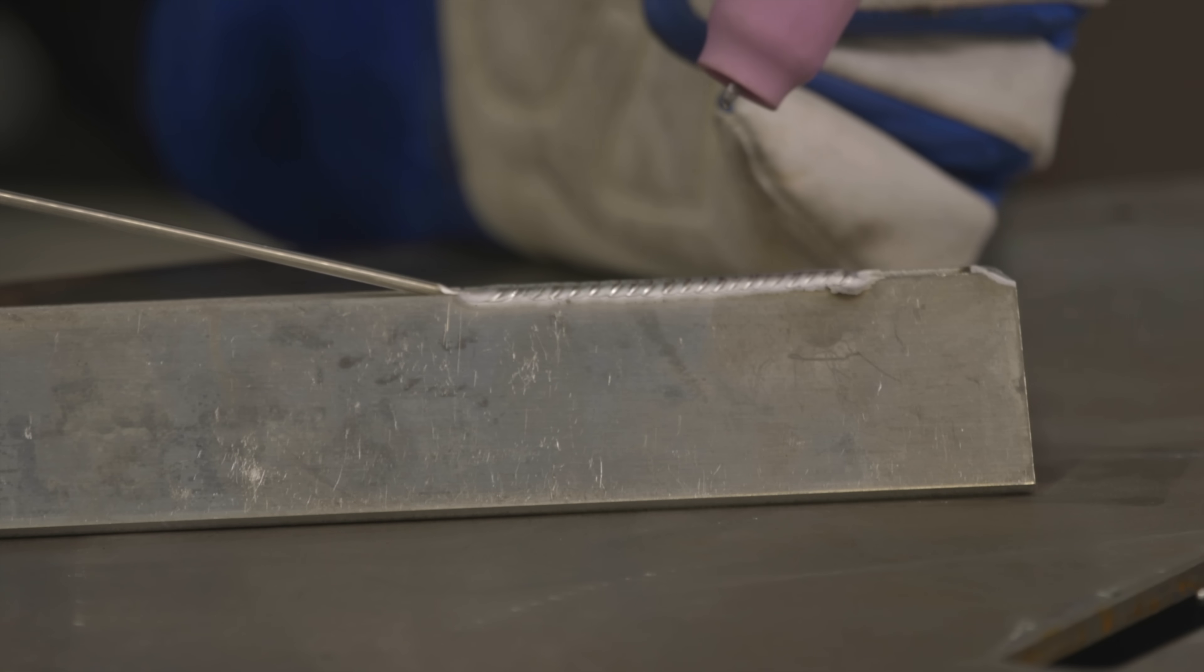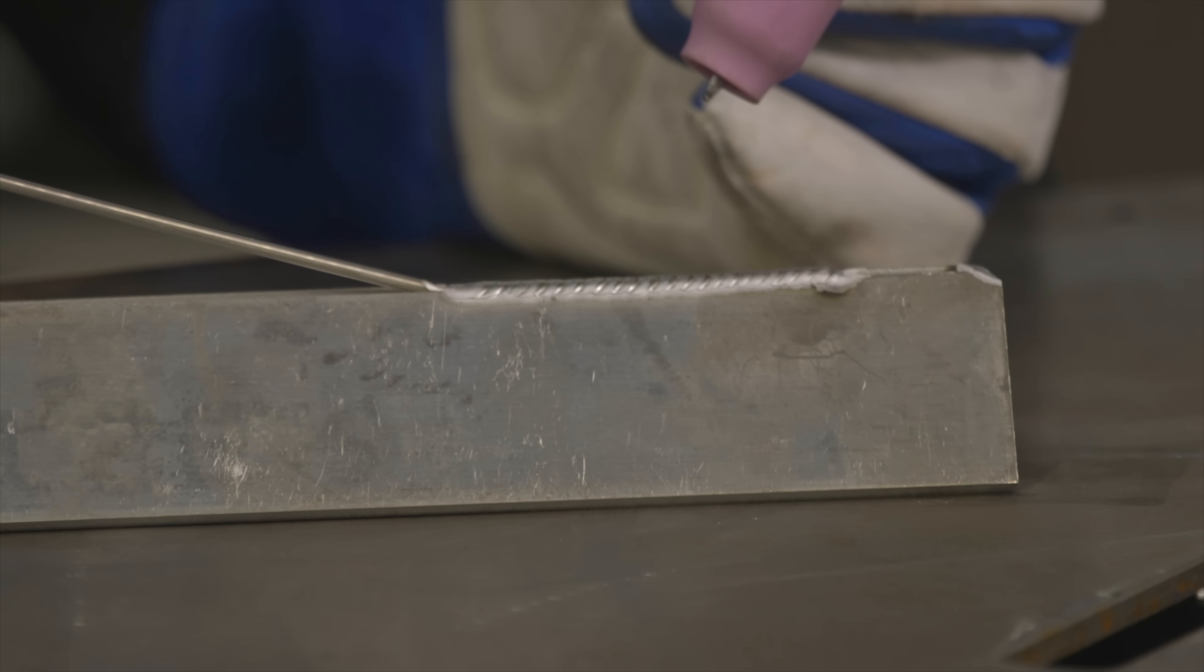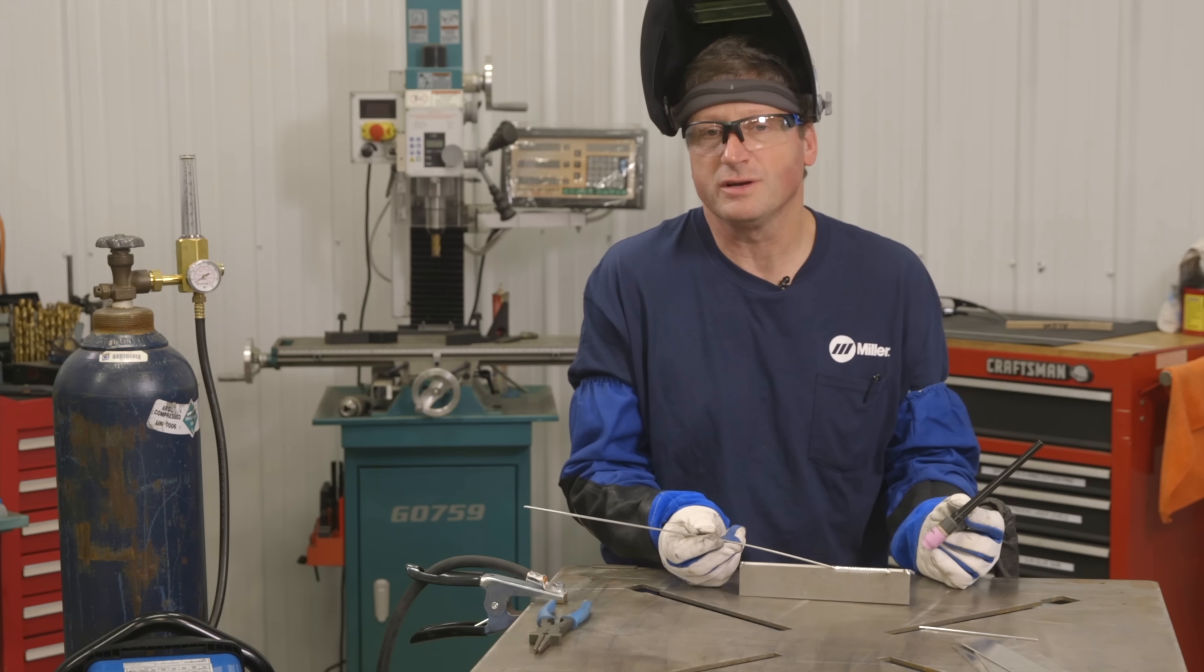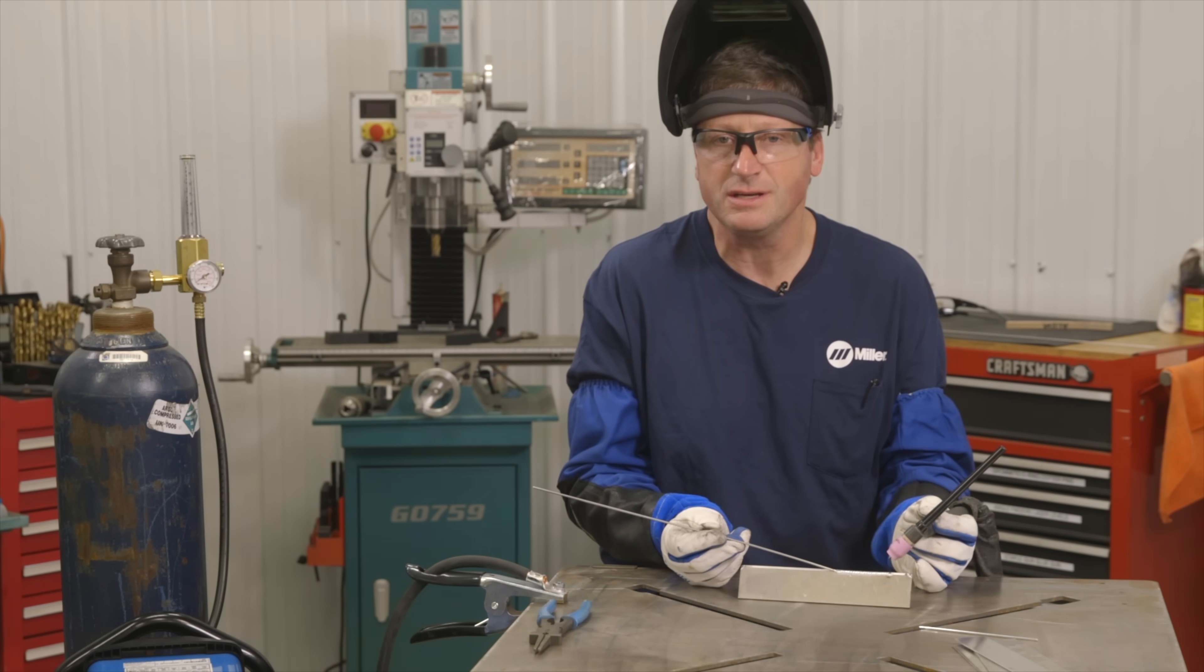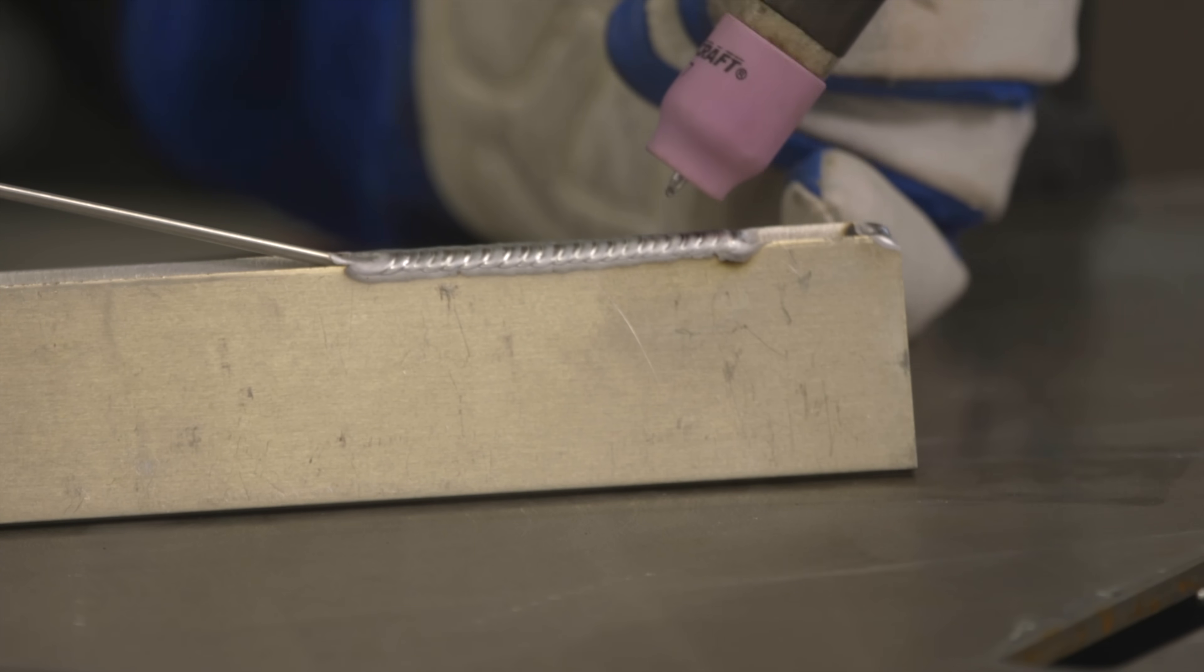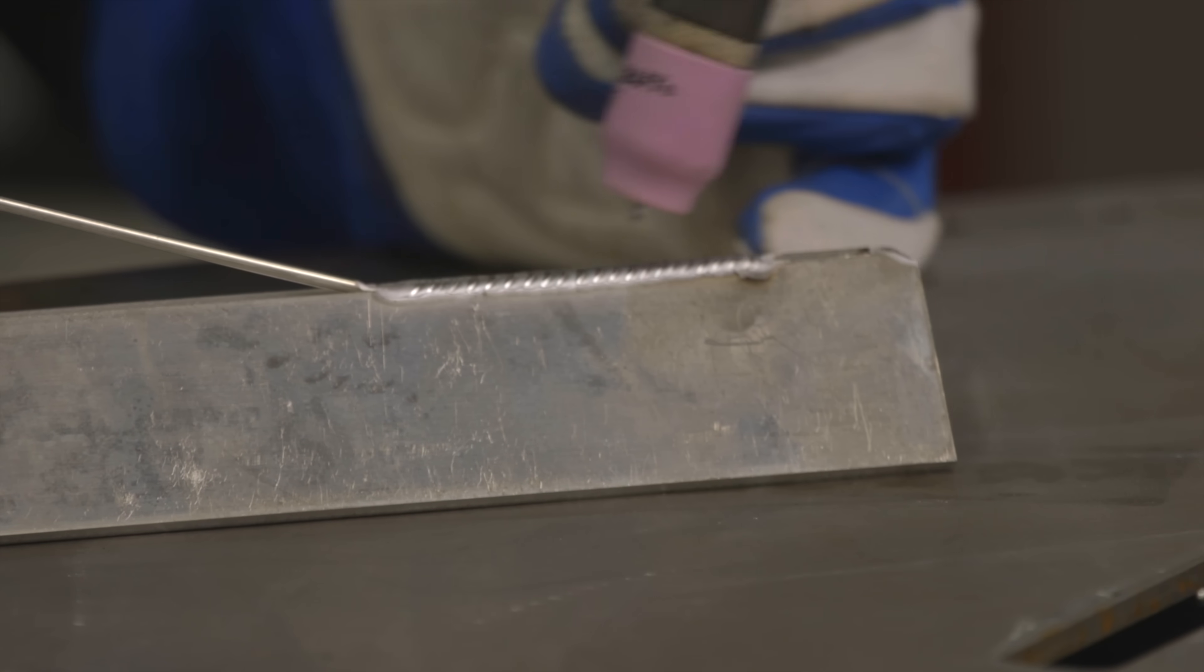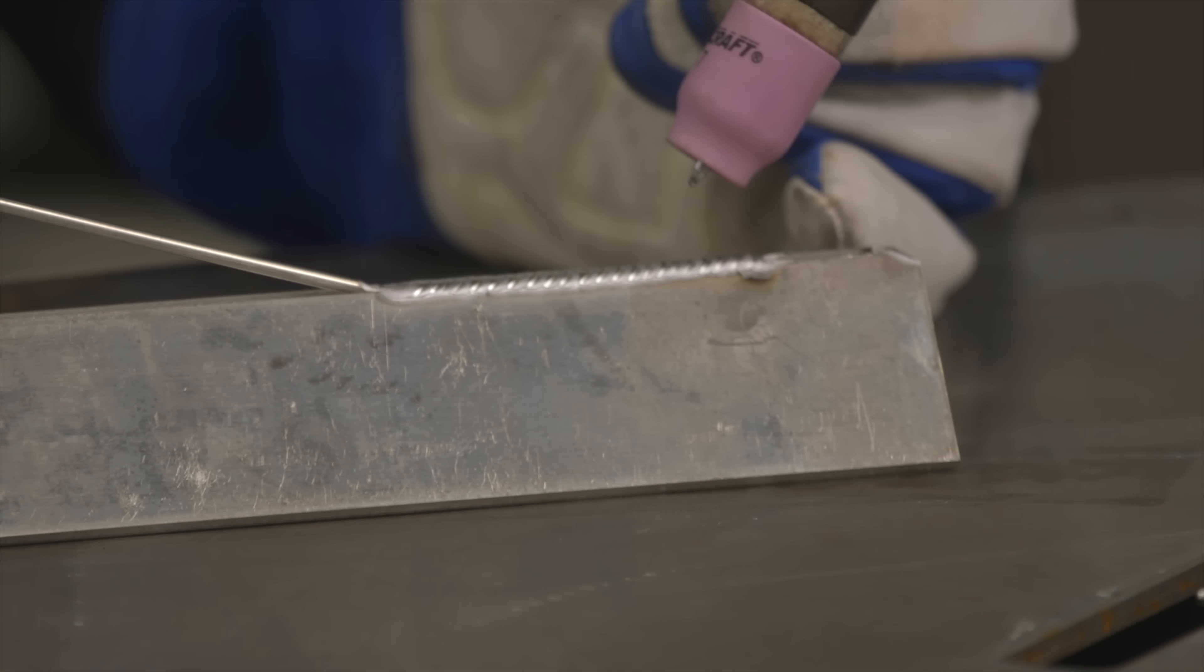I purposely left the TIG filler in the joint at the end of the weld just to show you that I was laying the filler metal in the joint the whole time, wasn't really even moving it. I was just letting the machine do the work for me and wash that filler metal into the weld joint.